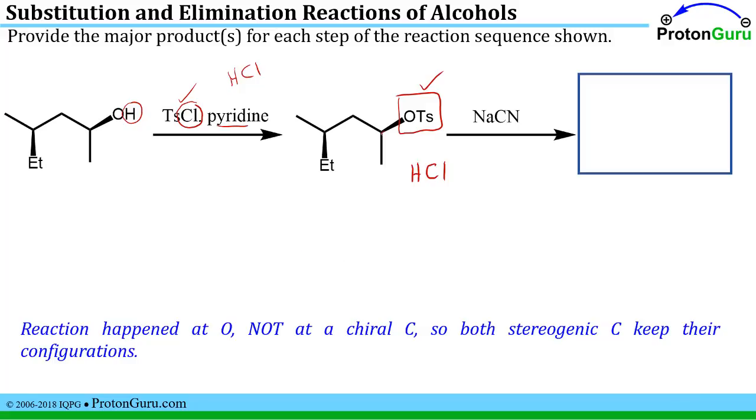Also, we didn't do a reaction at this carbon yet. We only reacted the oxygen. So this carbon keeps its configuration. Of course, we did nothing to this carbon either. So both those carbons have the same configuration as they had in the starting material. So having figured that out, what reaction is the next step?